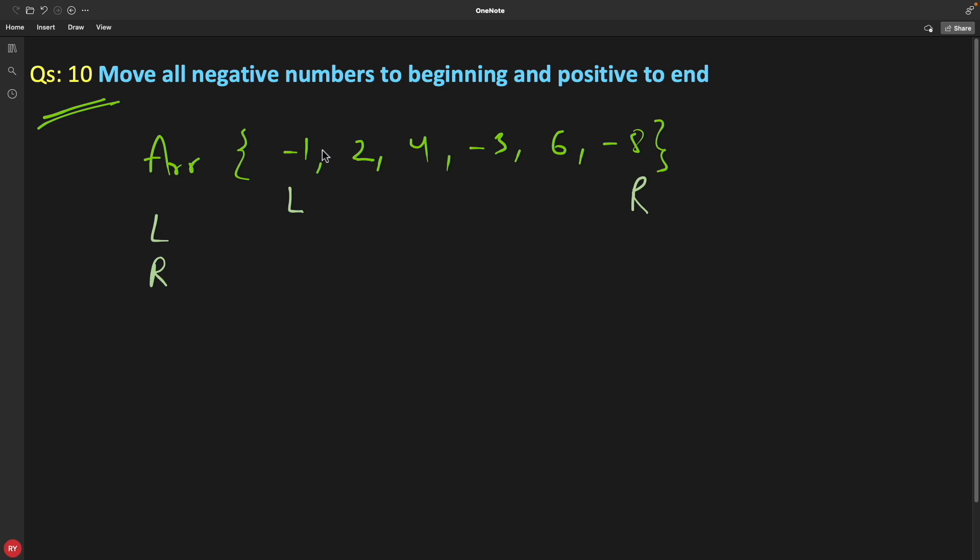So now we have initialized our left and right. You just check left value, which is this, and right value, which is this. Minus 1 is at its correct position. Here you should have a less than zero number, and here you should have greater than zero number. But now you're having less than zero number here, so we have to change this place. How you're gonna do that? Until you increment this and find something positive so that you can replace that with this, you will keep incrementing this L.